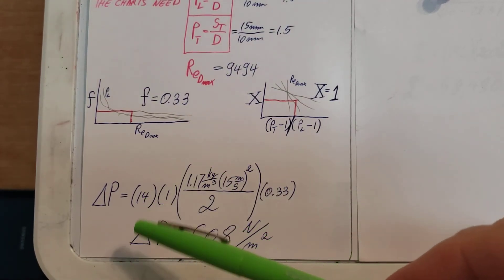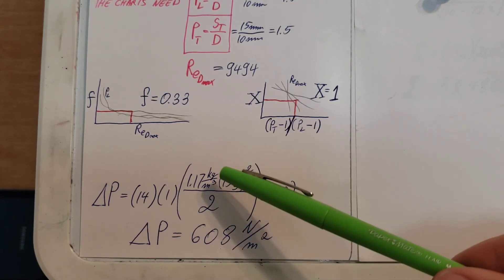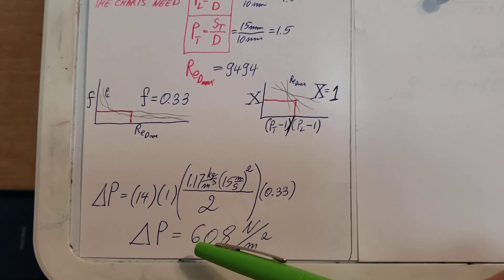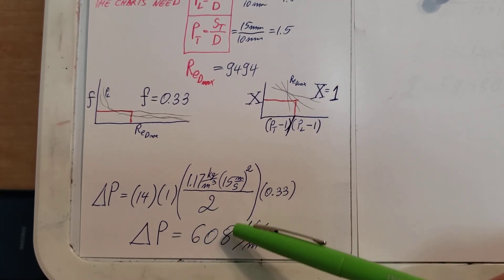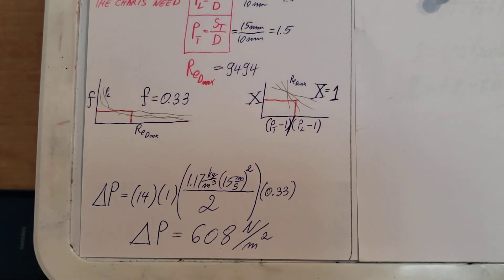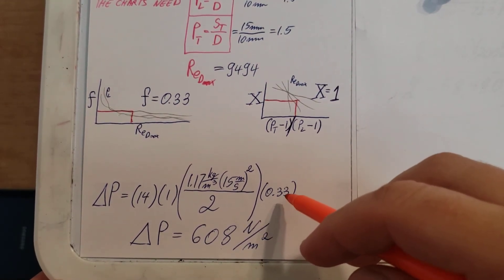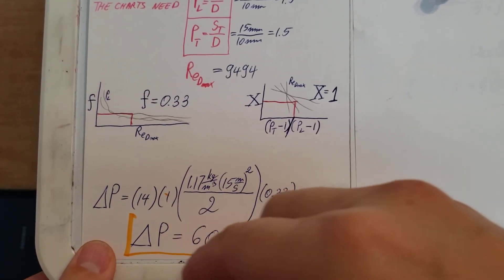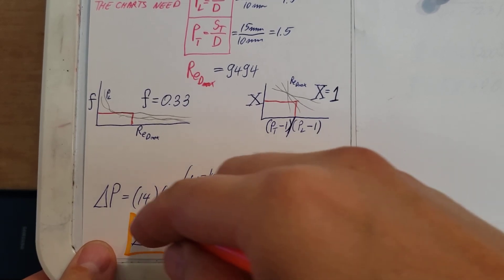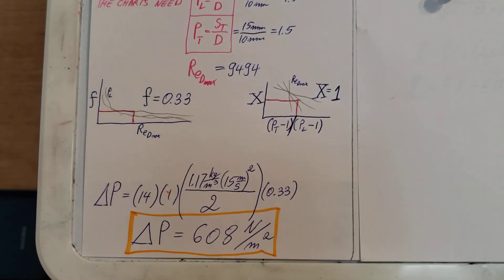Here it is. You can go ahead and plug everything in on your own, and then we are able to find a pressure difference of 608 Newtons per meter square. Obviously, this will be a little bit lower or higher because a lot of estimation comes into play, so my number might be a little bit different than yours but it should be roughly in the same ballpark.